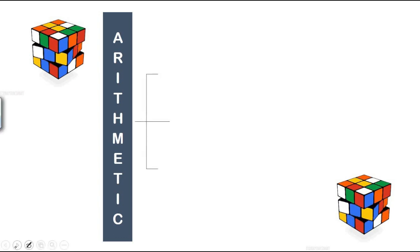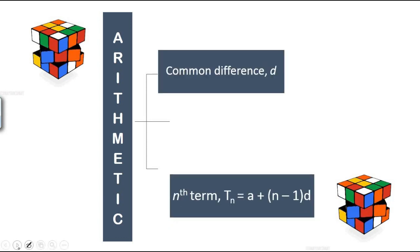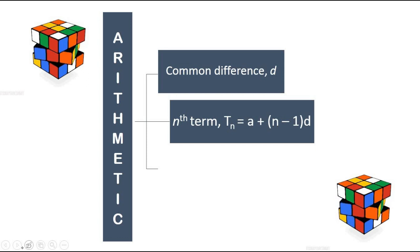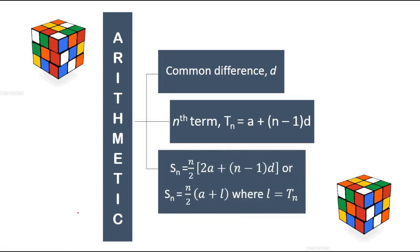So under arithmetic you should know about common difference which is denoted as d. We do have our consistent formula for the nth term which is a plus n minus 1d, as well as the sum which is denoted as Sn which equals to n over 2 in the bracket 2a plus n minus 1d, or some people might want to use n over 2 times a plus l where l is actually Tn.